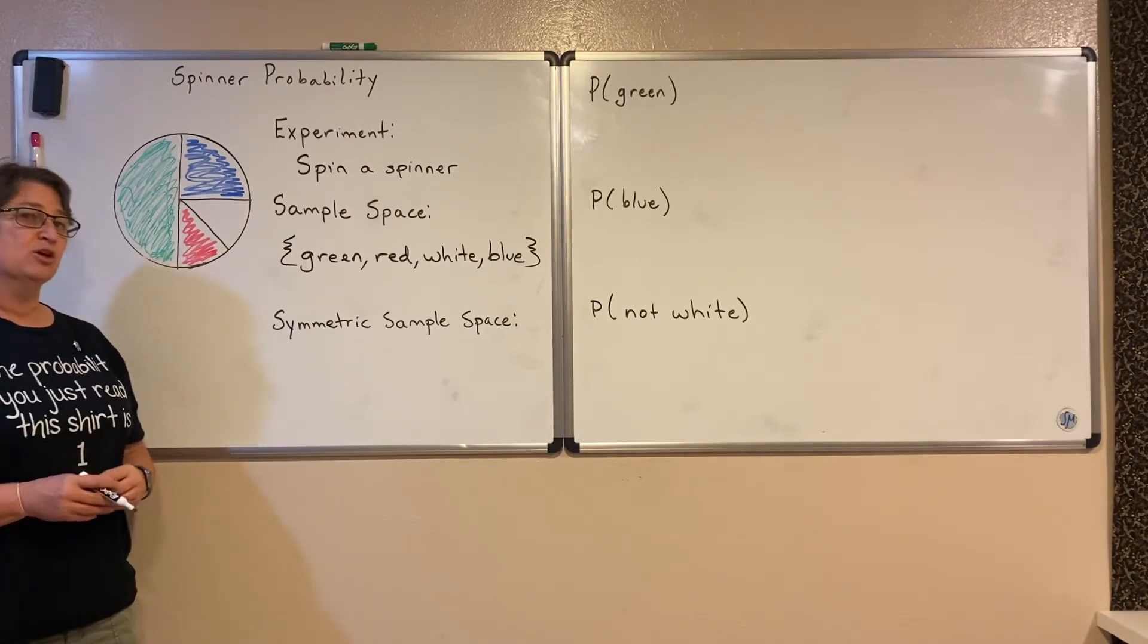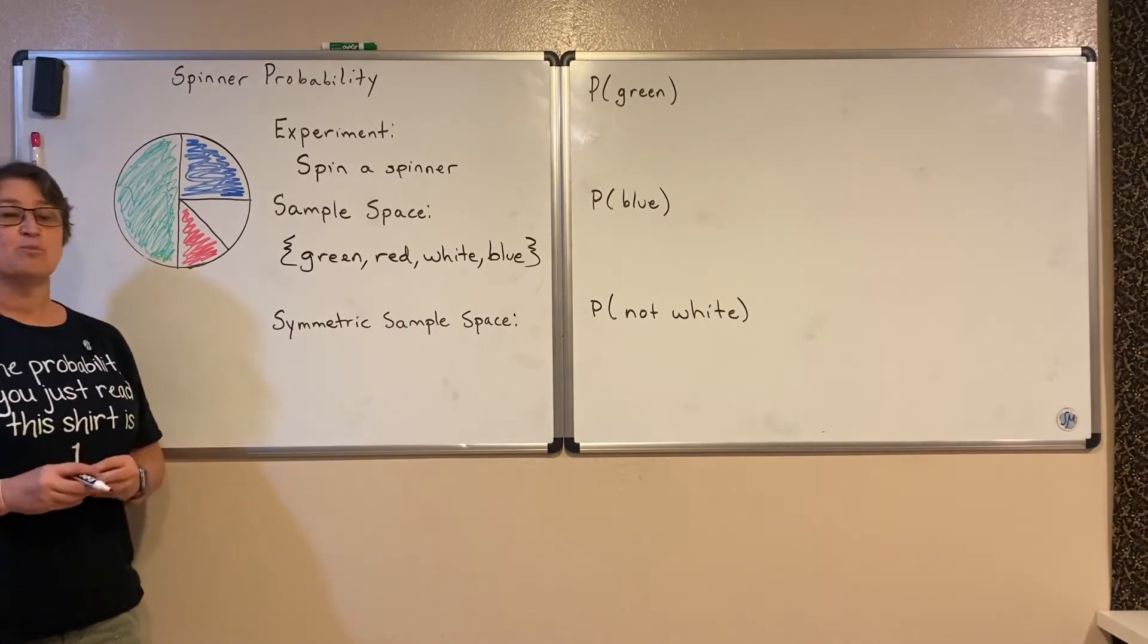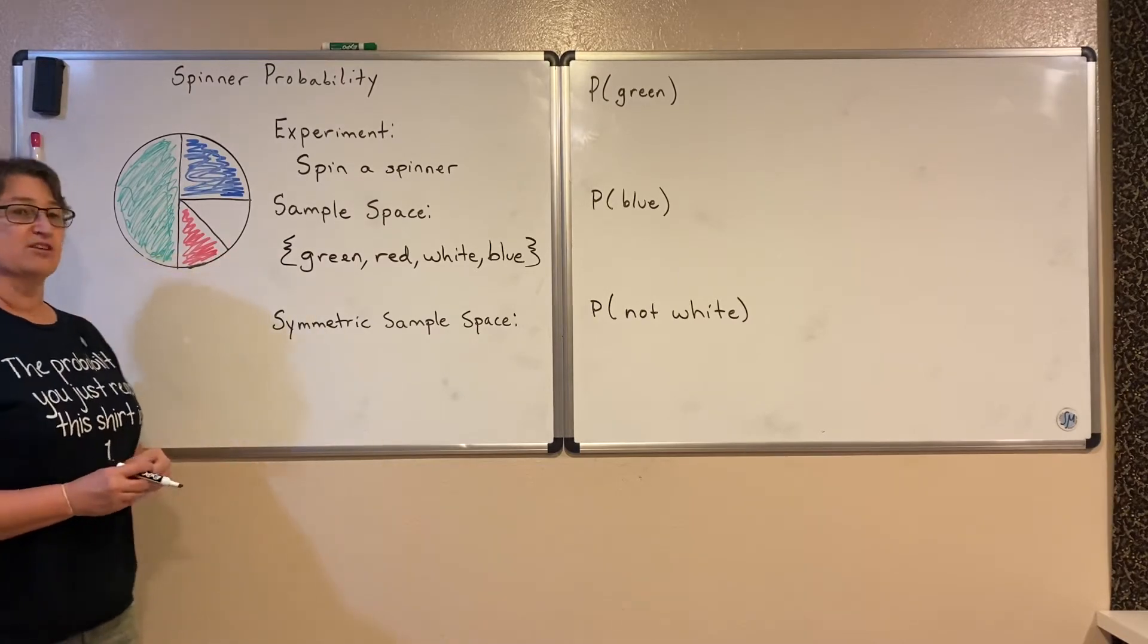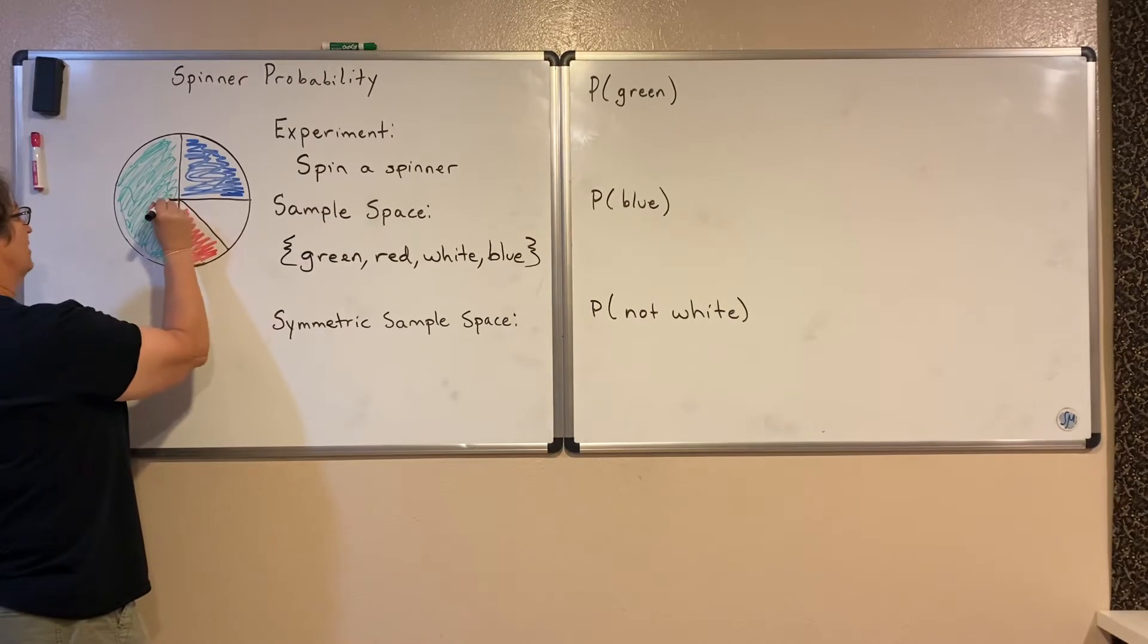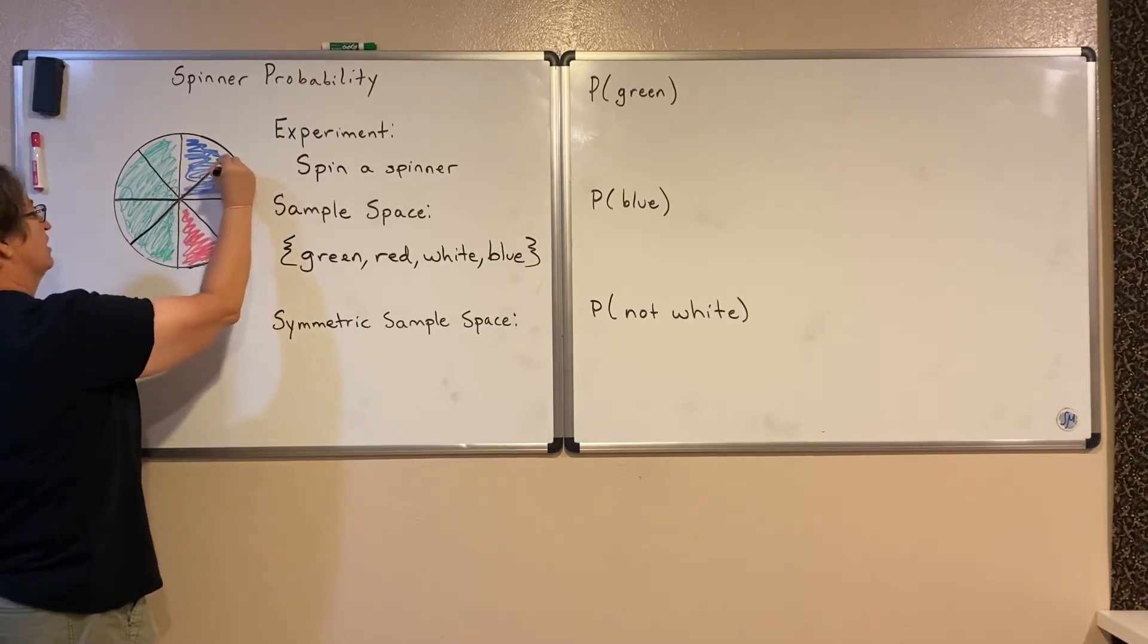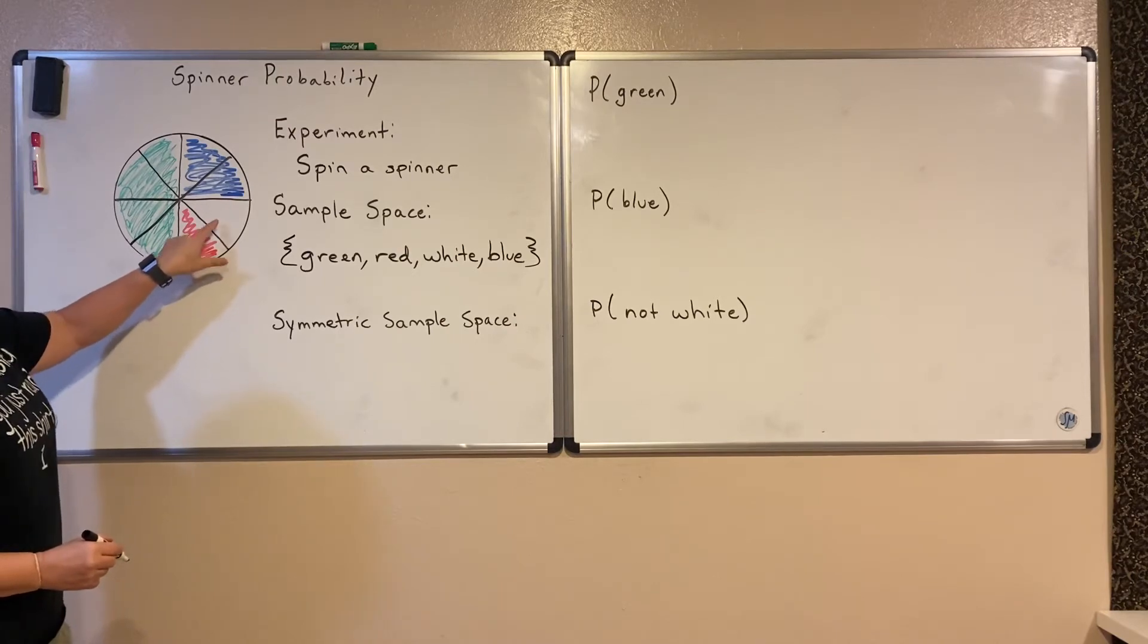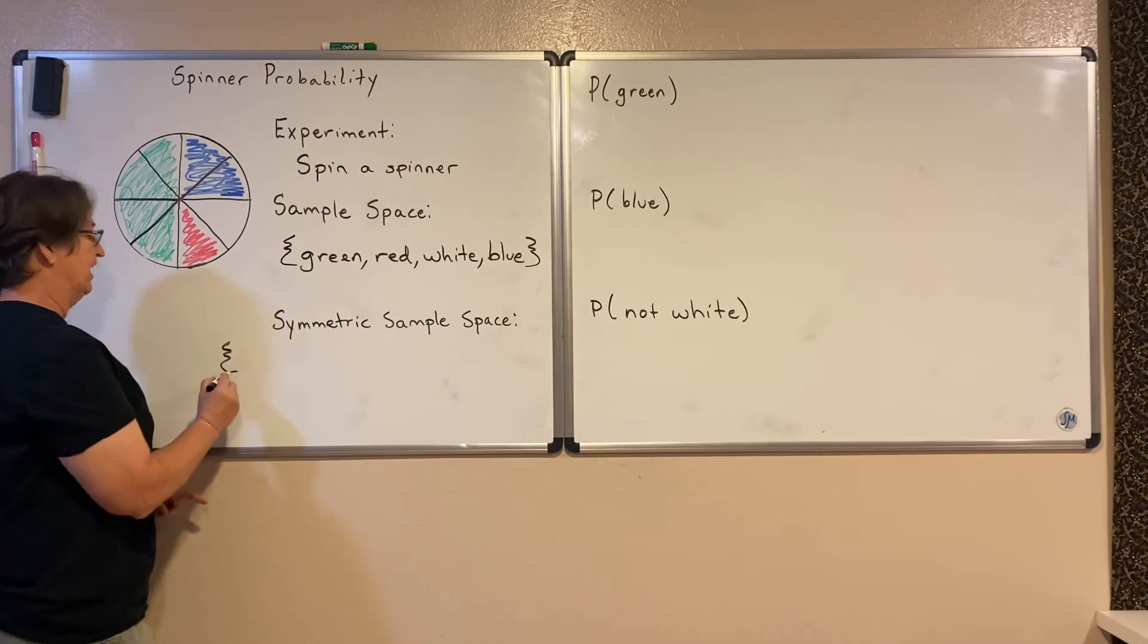The symmetric sample space shows each possibility equally likely. So if I divide this up into equal pieces, so that all of my pieces on the spinner are exactly the same, now it is just as likely I land here as it is that I land there.